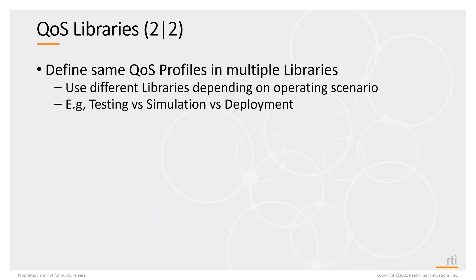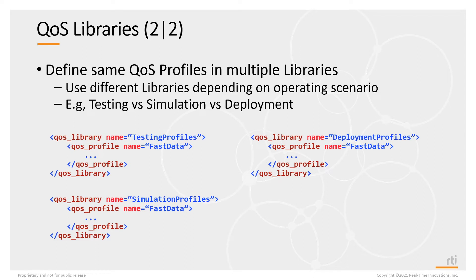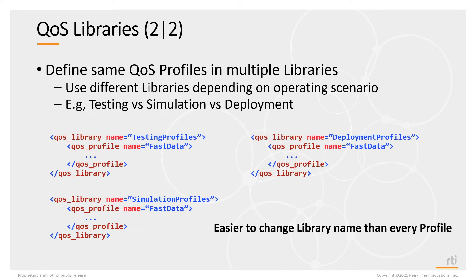There are also scenarios where you yourself may want to define the same QoS profile name multiple times to support your application under different operating scenarios. For example, the QoS required for testing may be different than for simulation, which may be different than for deployment. You can create three different libraries: one for testing profiles, one for simulation profiles, and one for deployment profiles. It's far easier to change which library your profiles come from than to manage a flat namespace of all profile variations.